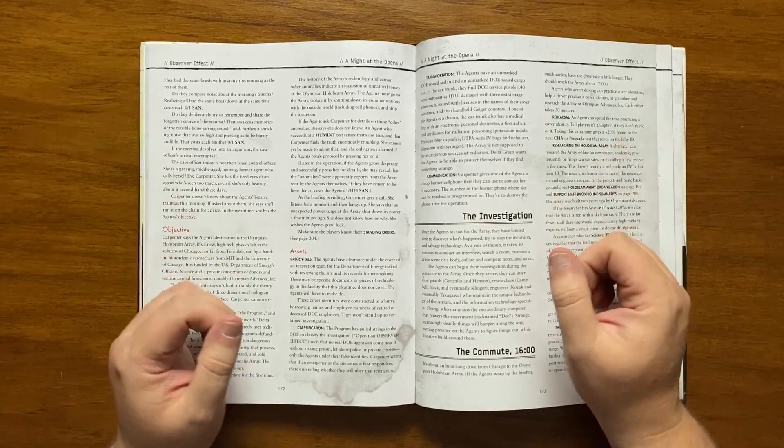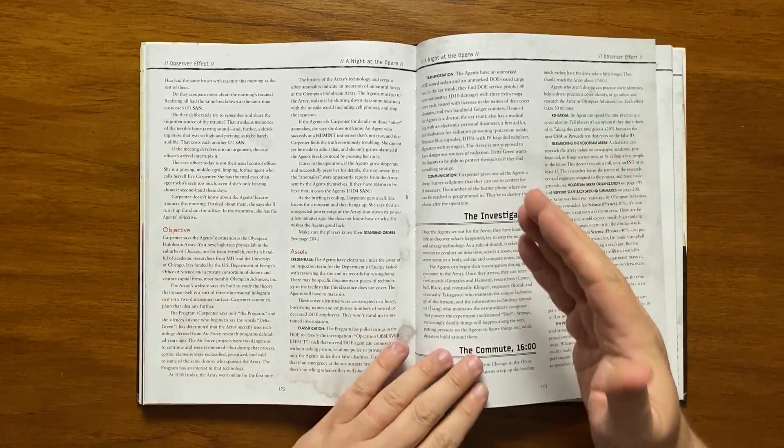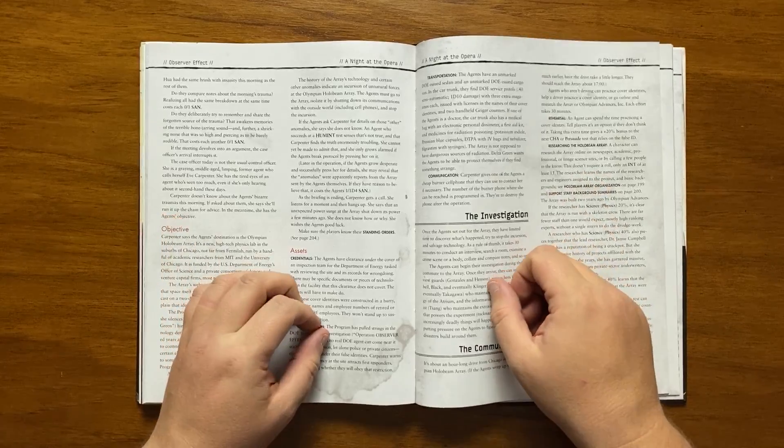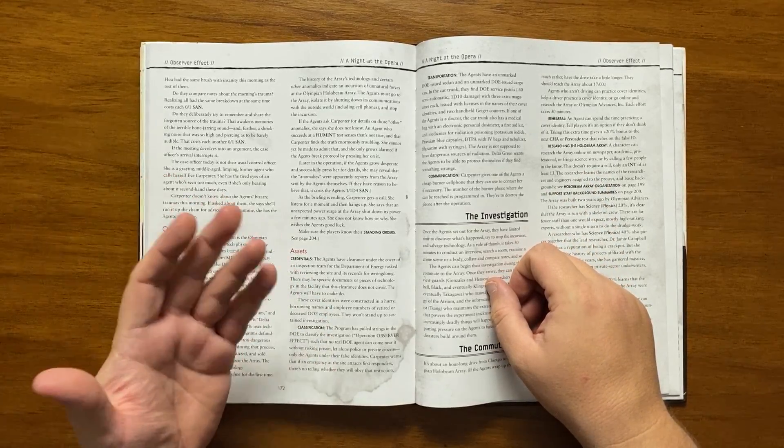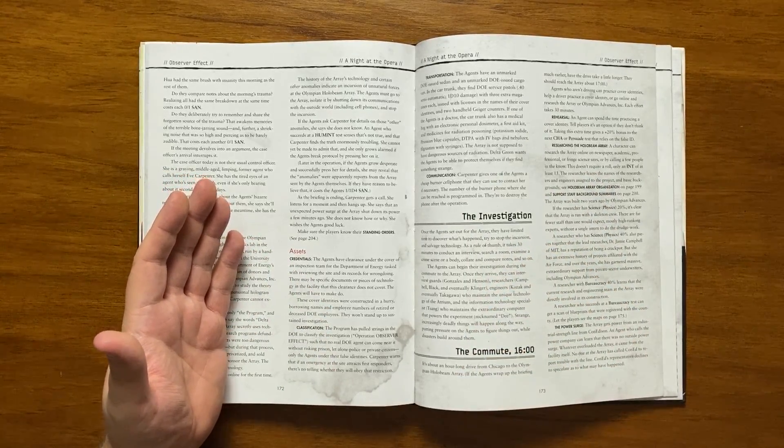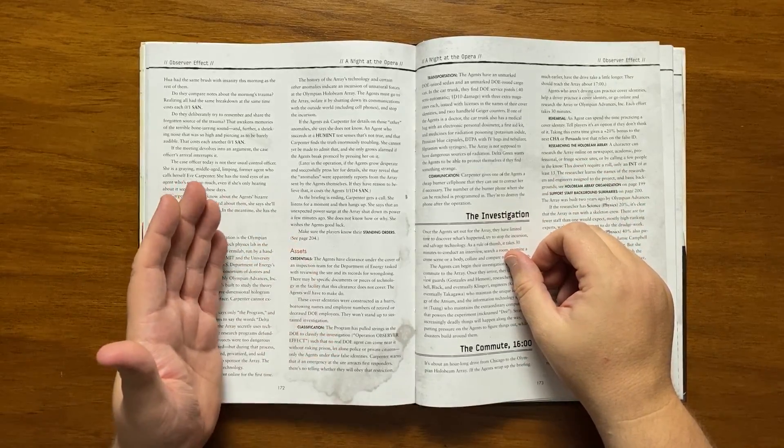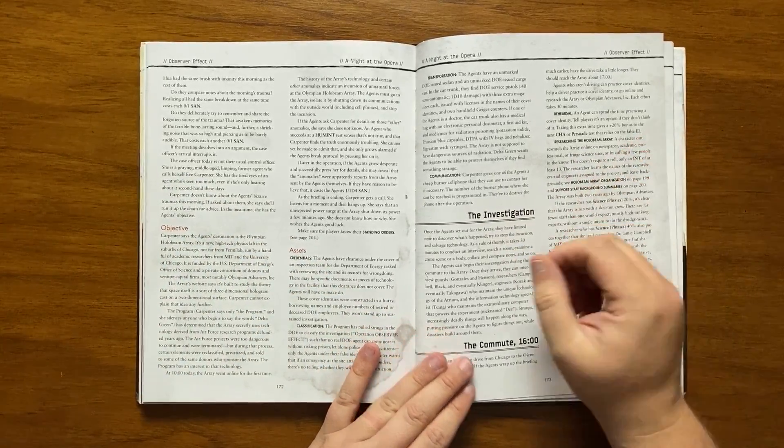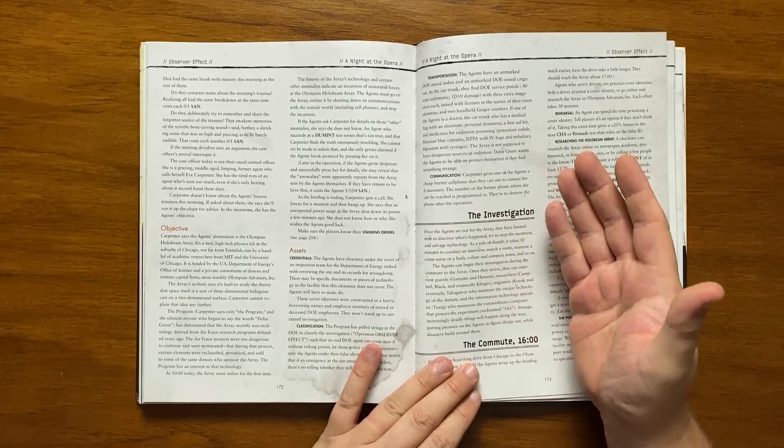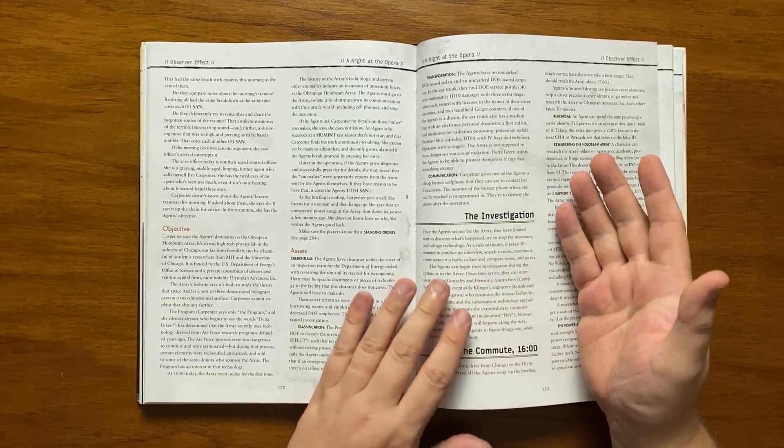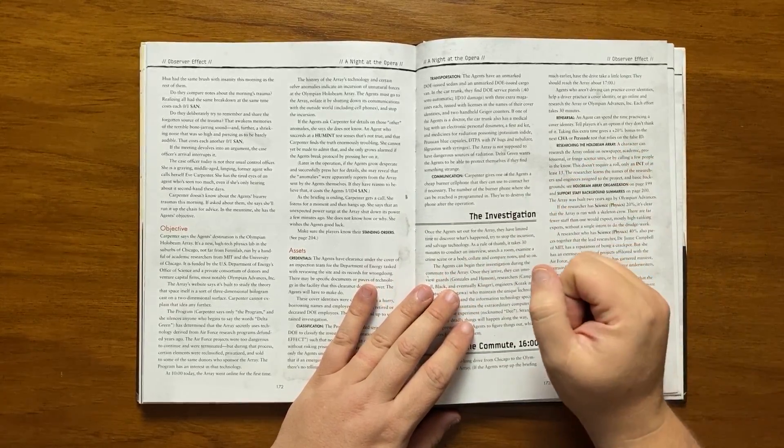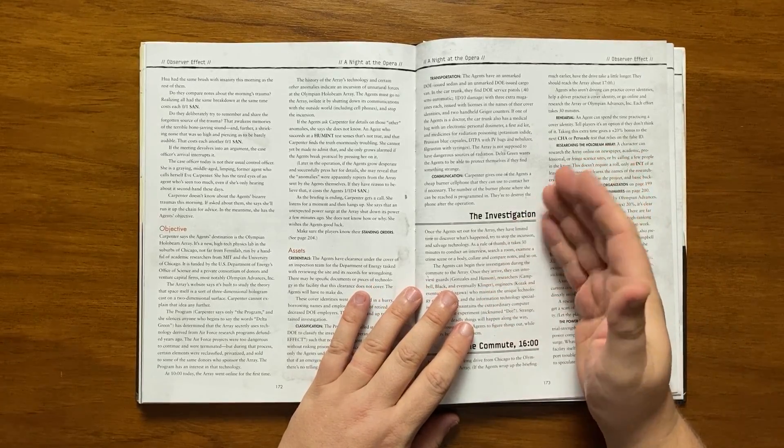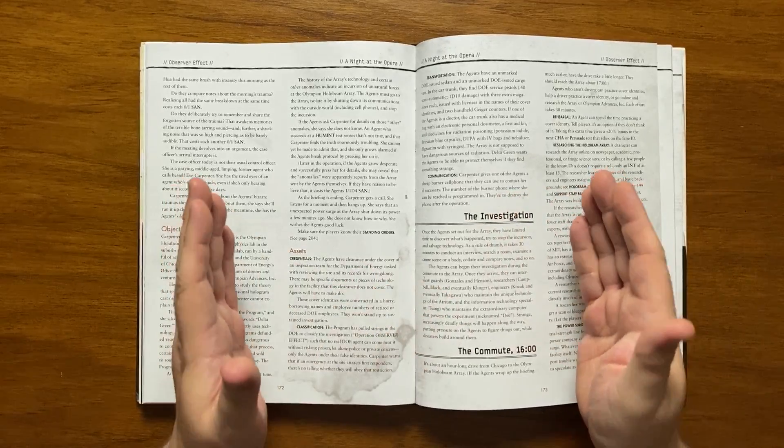If pressed on the other anomalies, she will say nothing, but may at a later point advise the agents that the reports from the Array were from the agents themselves. During the meeting she will get a call saying that an unexpected power surger shut the Array down, not knowing the how or why, and wishes the agents good luck sending them off. The agents cover is an inspection team from the Department of Energy who are there to review the site, though as it was put together in a hurry close scrutiny of their identities will not stand up. They are advised that no real Department of Energy employee can come near the Array, and that an emergency that requires first responders may cause them trouble.